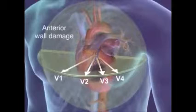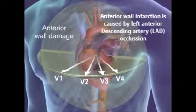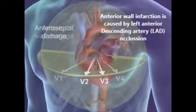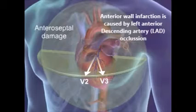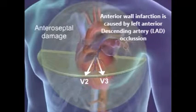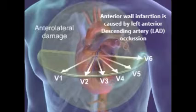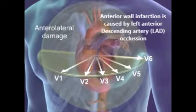Anterior wall damage is reflected by changes in leads V1 to V4. Anteroseptal damage is seen only in V2 and/or V3 leads. Anterolateral damage is seen on V1 to V4 and V5 and V6.